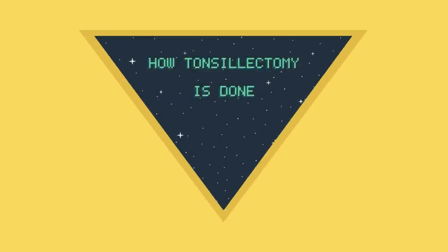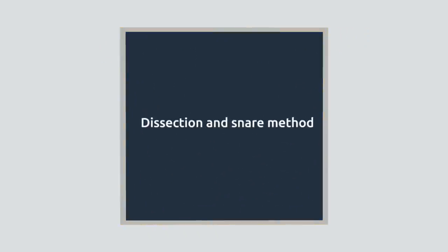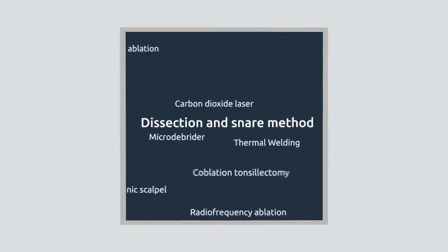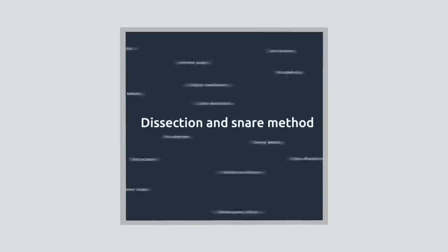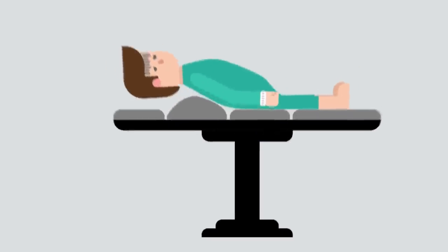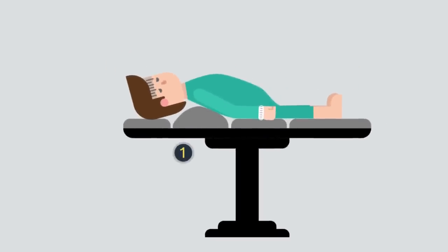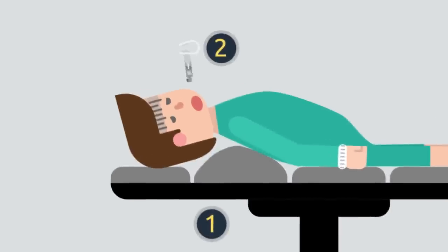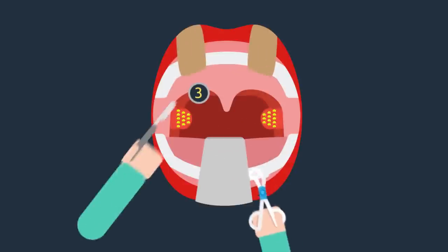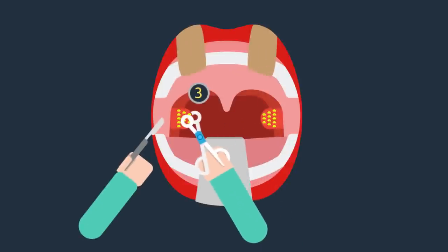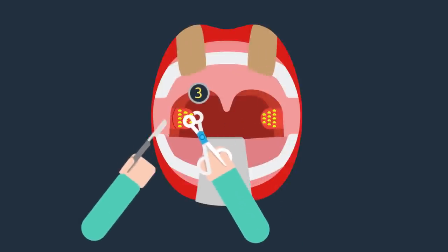How tonsillectomy is done — Dissection and Snare Method: one of the most commonly used methods. Steps: 1. Patient is placed in the rose position. 2. Boyle-Davis mouth gag is introduced and opened, held in place by Draffin's bipods or a string over a pulley. 3. Tonsil is grasped with forceps and pulled medially. Incision is made in the mucous membrane.